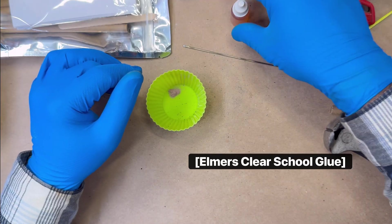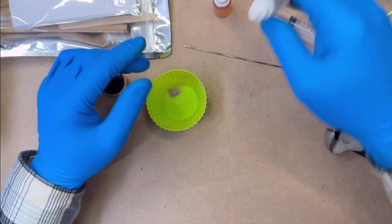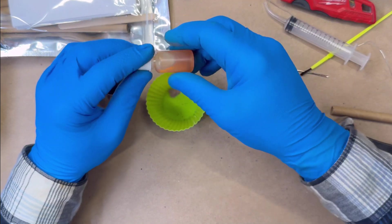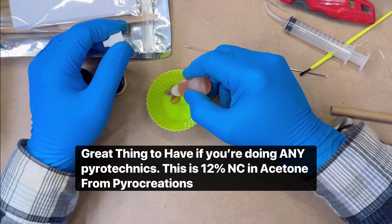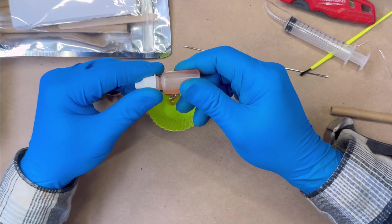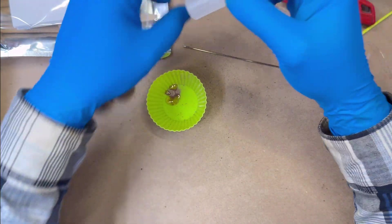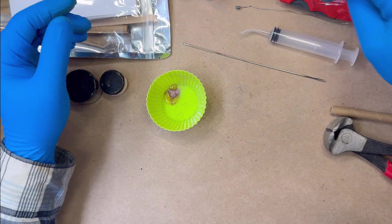You can use the PVA glue that's included. Or in this case, I'm going to be using nitrocellulose. No, you know what? I'll just use PVA. No, I'll use nitrocellulose lacquer so I can finish this video all in one shot. This is 12% nitrocellulose in acetone. However, it does have a little bit of a longer dry time.